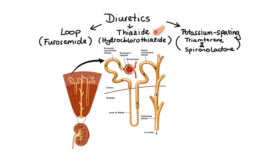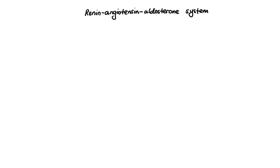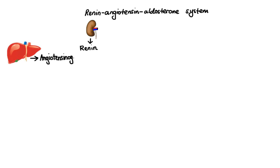Now let's move on to agents that work on the renin-angiotensin-aldosterone system. There are three pharmacological targets that can be used to reduce the activity of angiotensin-2, which is ultimately responsible for causing blood pressure to increase. First, we have renin, the enzyme responsible for conversion of angiotensinogen to the precursor of angiotensin-2, that is angiotensin-1.